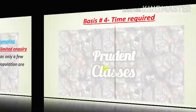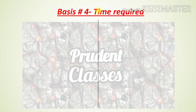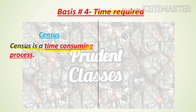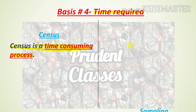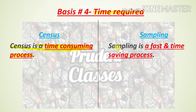Basis number 4 is time required. The census method is a time-consuming process because you have to study every member and every unit of the population, and studying every unit is not easy — so a large amount of time is required in the census method. On the other hand, the sampling method is a fast or time-saving process.